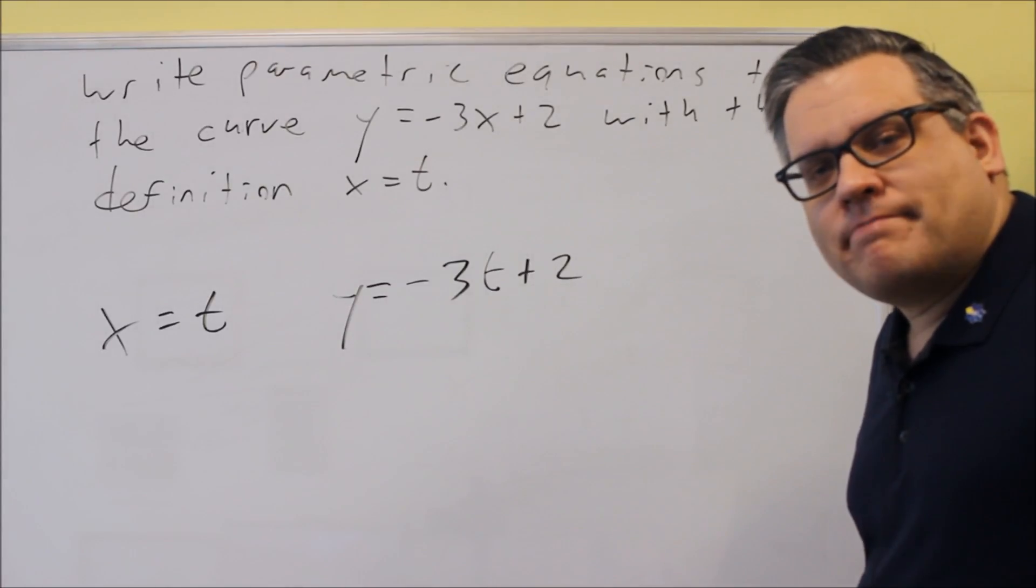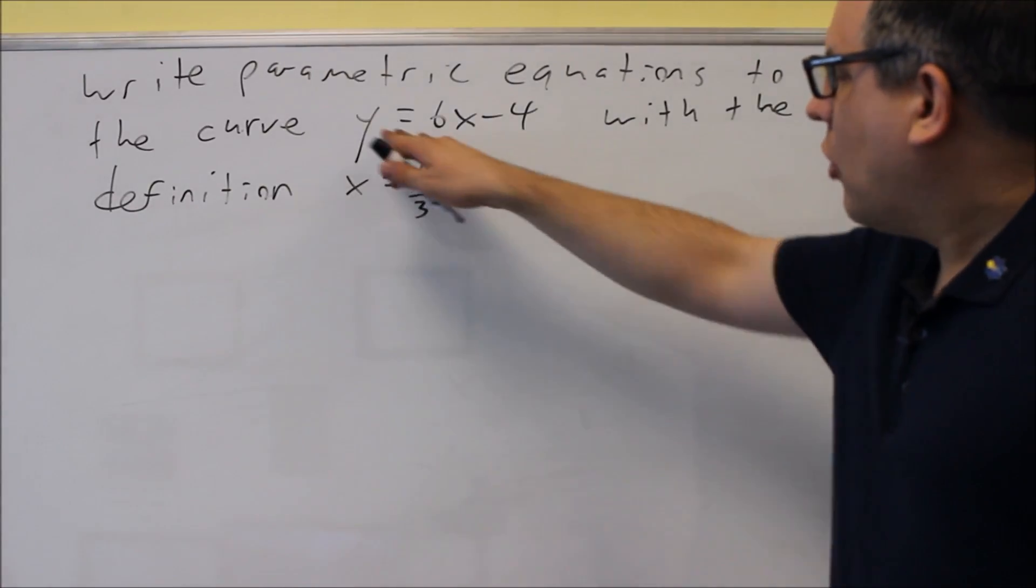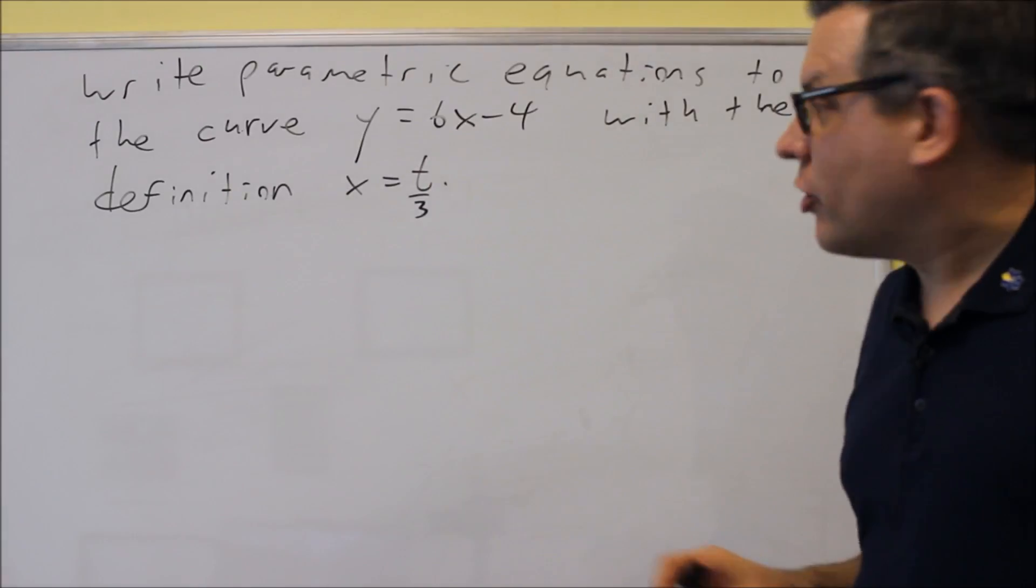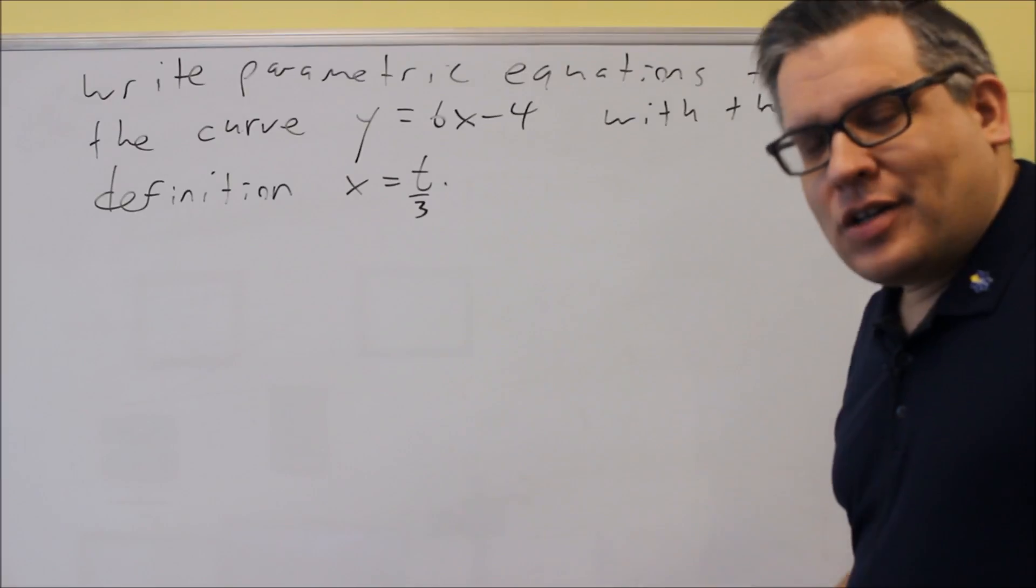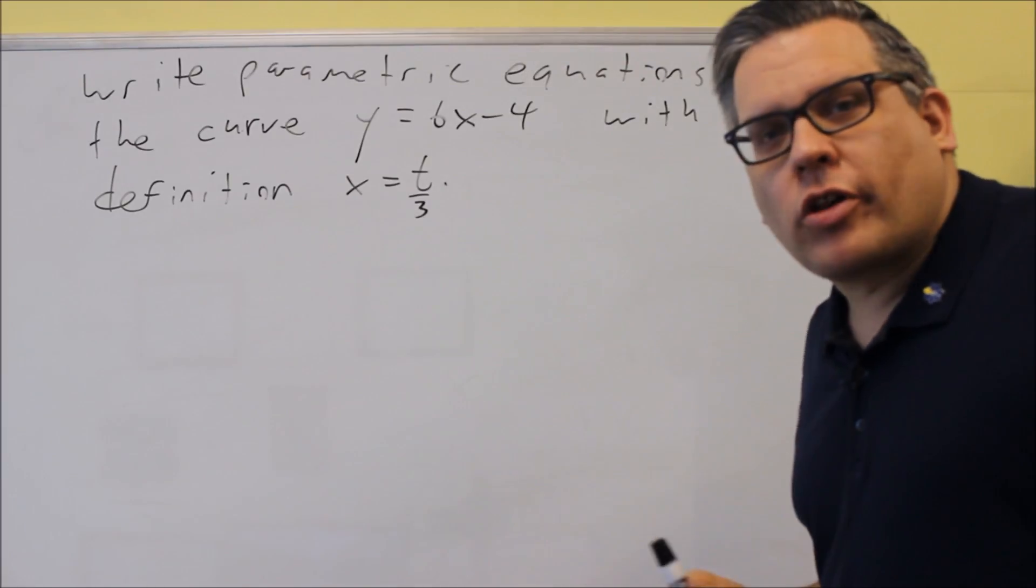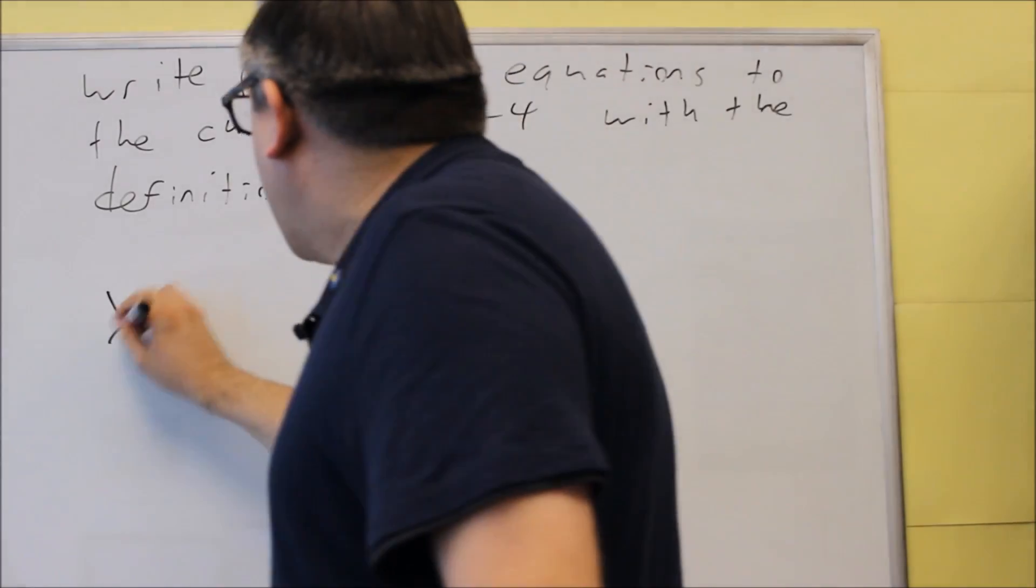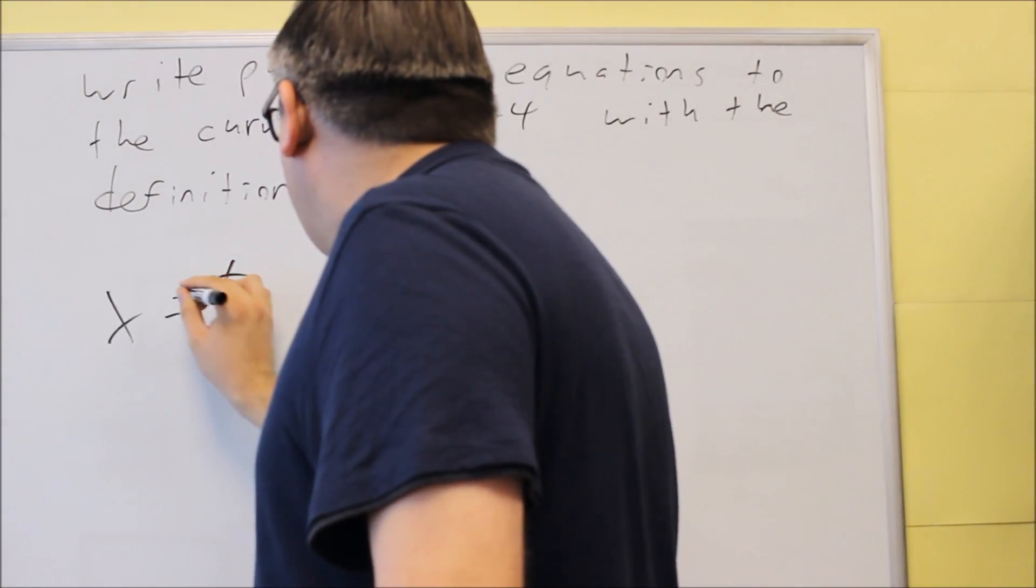Next one, y = 6x - 4 and this time they want us to use the definition x = t/3. Like before, they already give you one of the parametric equations. x = t/3.